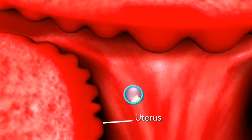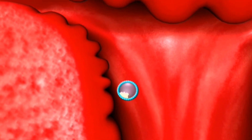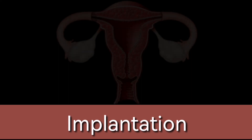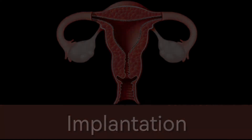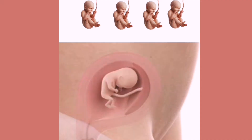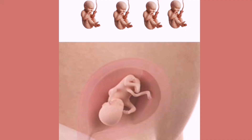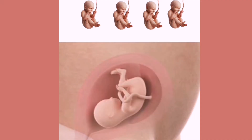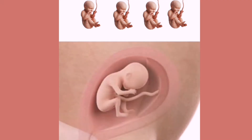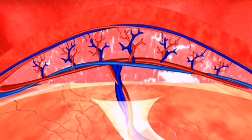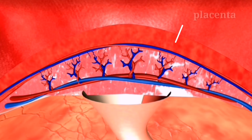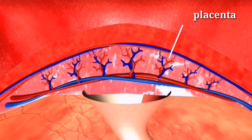Once it arrives, it implants itself in the uterine wall. This process is called implantation and typically happens about six to ten days after fertilization. Once the fertilized egg has implanted, it begins to grow and develop into an embryo, receiving nourishment from the mother's body through the placenta.